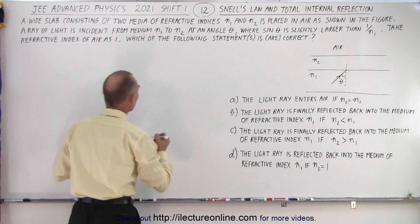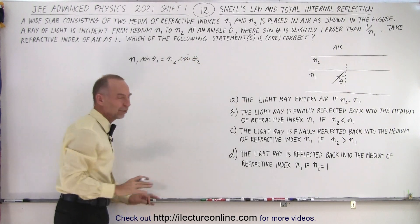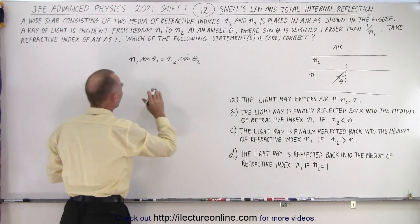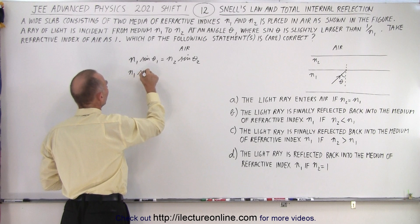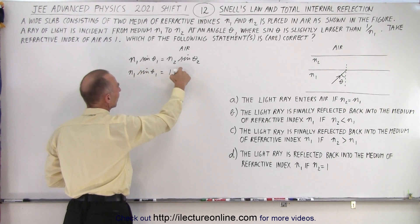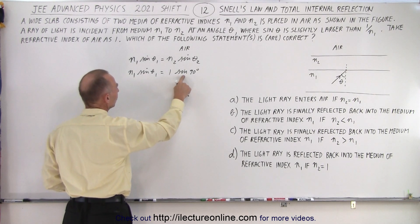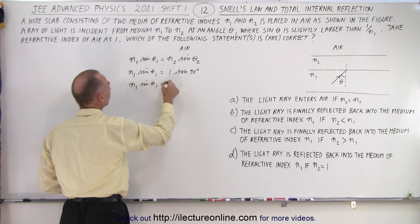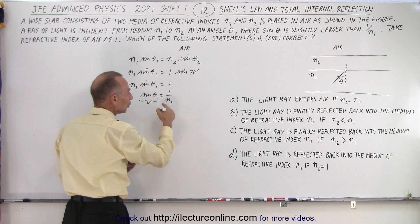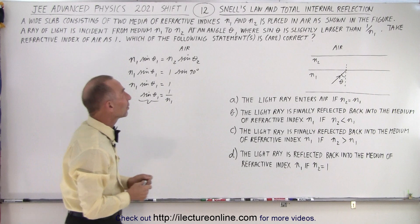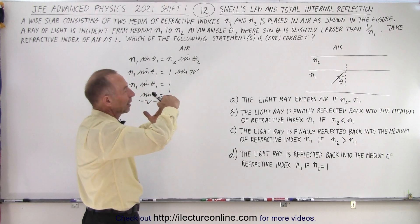Let's think about total internal reflection. We have N1 sine(θ₁) = N2 sine(θ₂). In general, going from medium 1 to medium 2, if medium 2 is air, then N1 sine(θ₁) = 1 × sine(90°) for total internal reflection — meaning the light won't go into the air but will reflect back into the medium. So N1 sine(θ₁) = 1, which gives sine(θ₁) = 1/N1. If sine theta is larger than that, we have total internal reflection. So essentially, sine theta > 1/N1 means total internal reflection will occur when the medium is bounded by air.